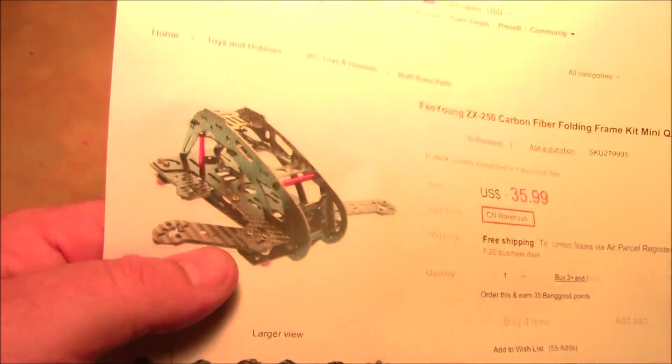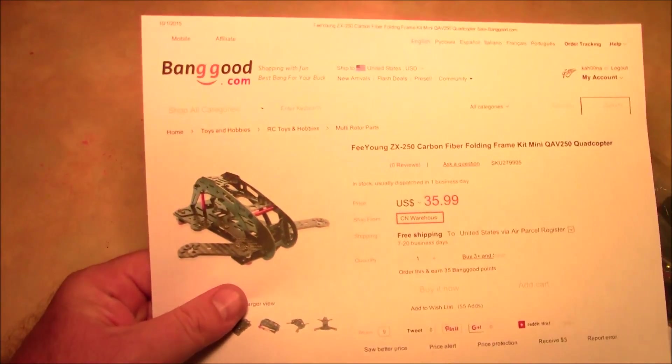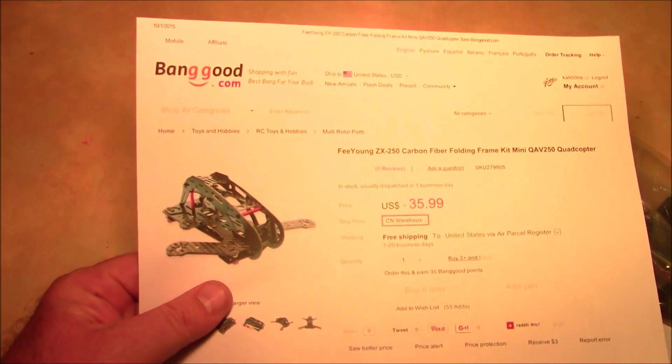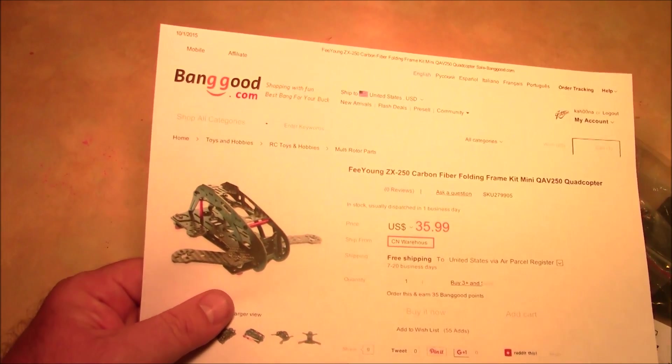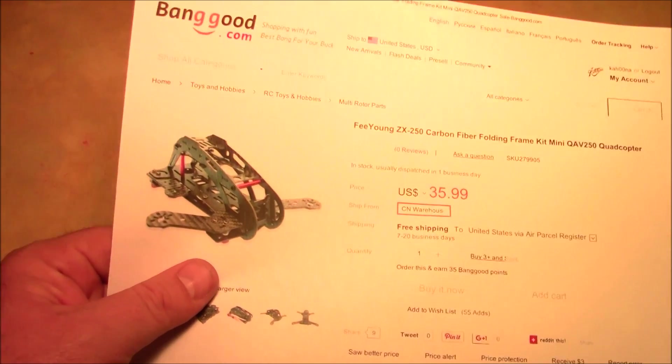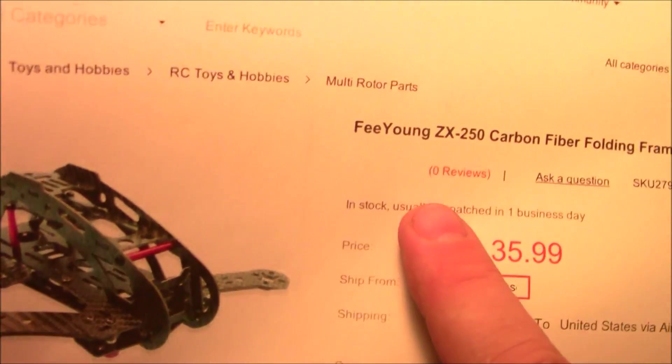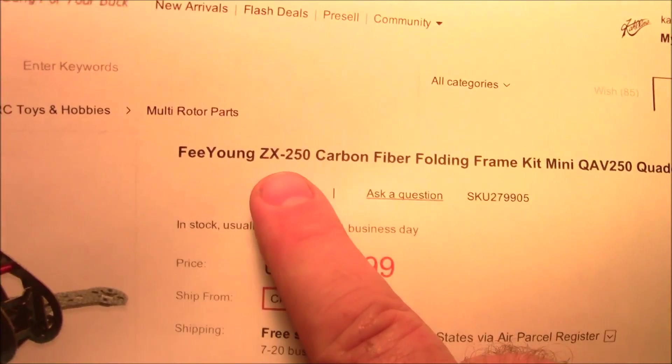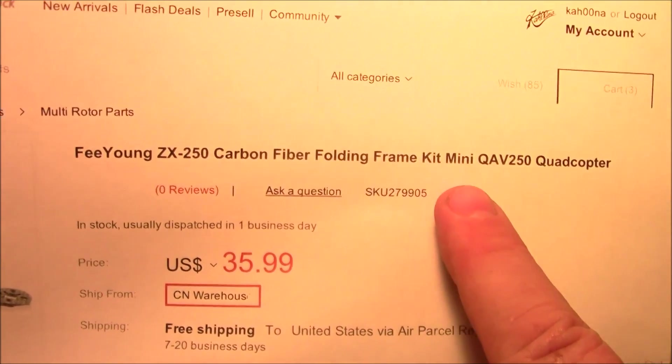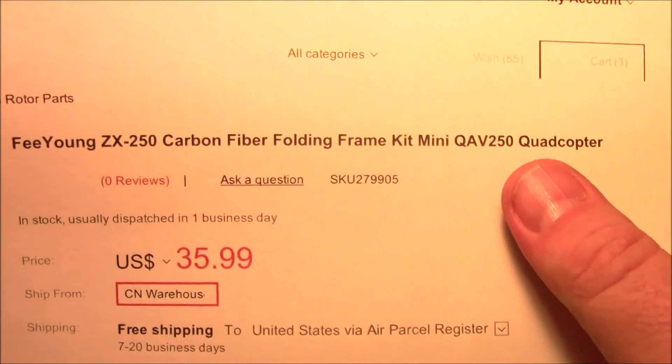We see it here in this one, and we've also seen it in the RoboCat and the Tarot 250 that looks very similar to the RoboCat. But this is the Fihong ZX250 carbon fiber folding frame kit, and it says QAV2 quadcopter. I don't know why it says QAV, but that's what it says.